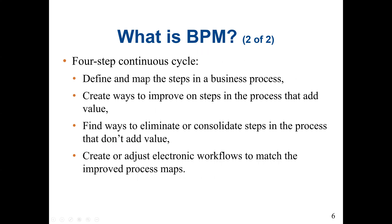There are four steps in the continuous cycle of business process management. First, we define and map the steps in a business process. Then we create ways to improve on steps in the process that add value. Then we find ways to eliminate or consolidate steps that don't add value. Finally, we create or adjust electronic workflows to match the improved process maps.